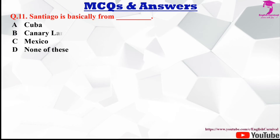Question number eleven: Santiago is originally from dash. Options are A Cuba, B Canary Islands, C Mexico, and D None of these. The correct answer is B, Canary Islands.